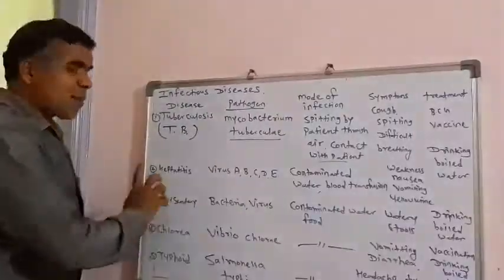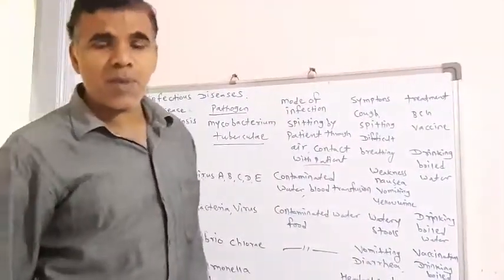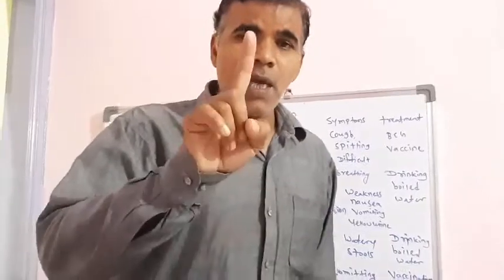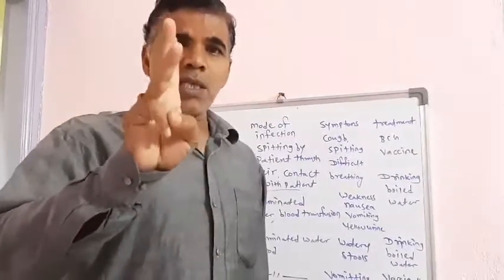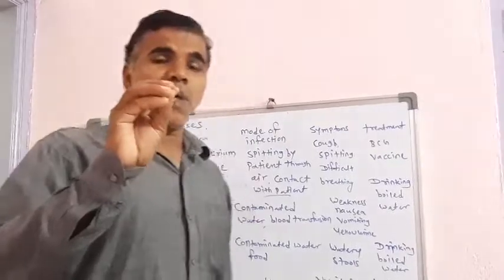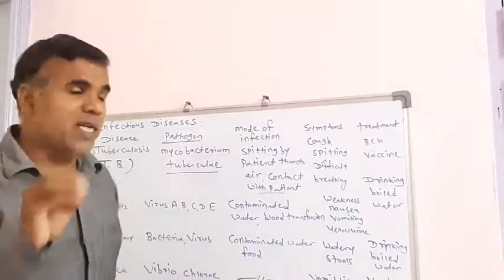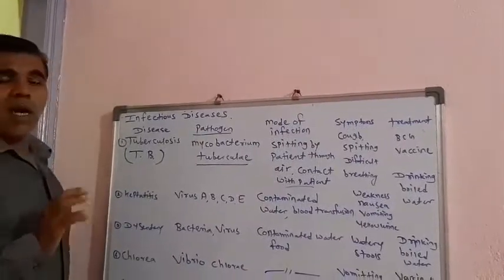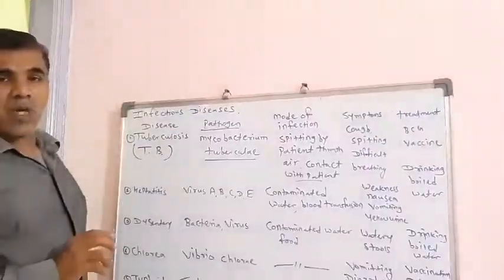Number two: Hepatitis. There are 5 types of Hepatitis — Hepatitis A, B, C, D, and E. These 5 types of Hepatitis occur due to viruses, contaminated water, and blood transfusion.